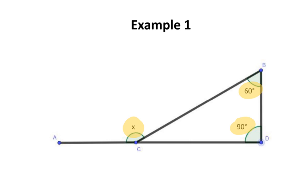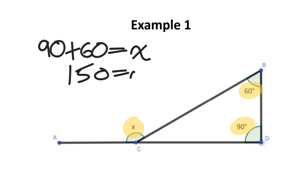We can represent this situation with an equation. 90 plus 60 is going to be equal to our unknown angle. We can simplify this equation by adding 90 and 60 together, which gives you 150. Therefore, the unknown angle is 150 degrees.